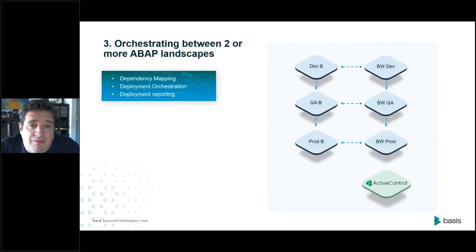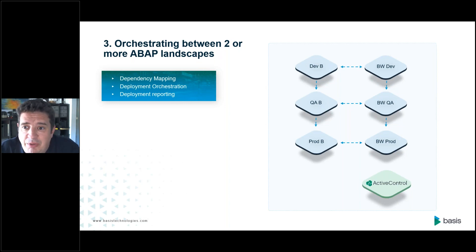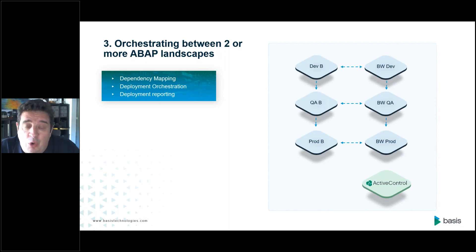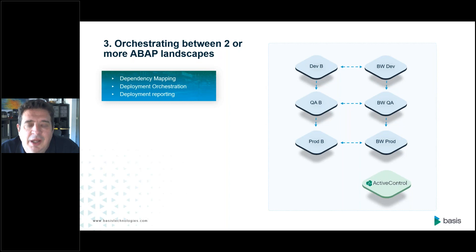The third scenario is very natural for most customers: having two or more different SAP landscapes — in this example, ABAP and BW — where a change needs to move through those corresponding landscapes in a coordinated or orchestrated way. For example, it only makes sense if the BW change goes through after or at the same time as the back-end change. Here you need to map dependencies, ensure synchronized or sequenced deployment, and report on anything blocked or dependent upon a change elsewhere in the landscape.